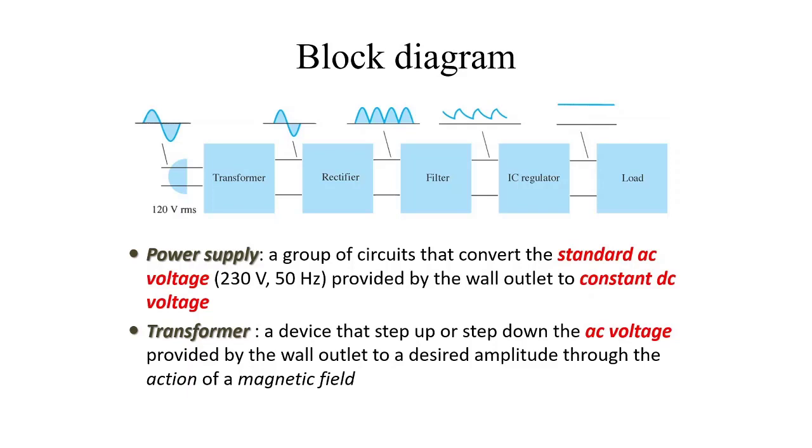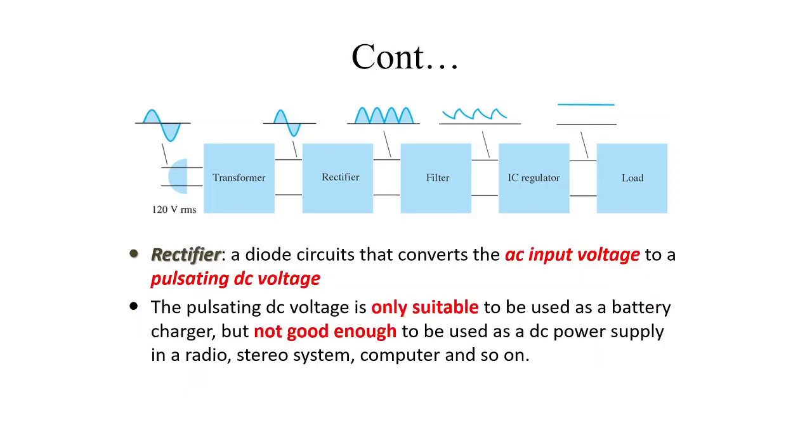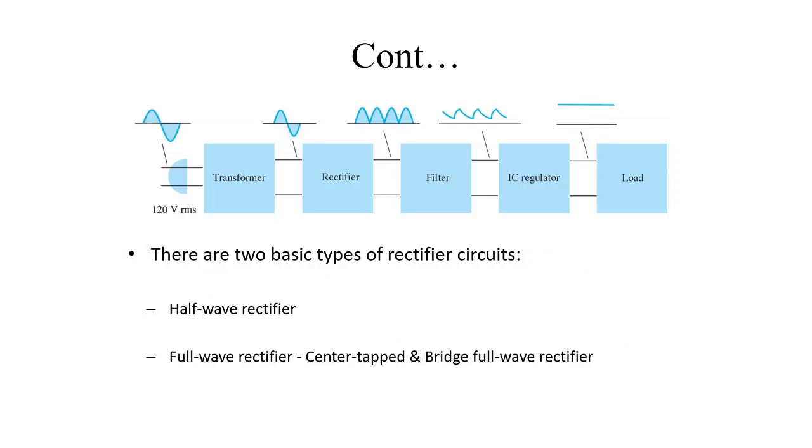The output of a transformer, which is a step down AC voltage, is applied to a rectifier. Rectifier may be a half-wave rectifier or a full-wave rectifier. The rectifier converts AC into pulsating DC. Mostly, full-wave rectifier is used. Half-wave rectifier will have more ripples compared to full-wave rectifier.